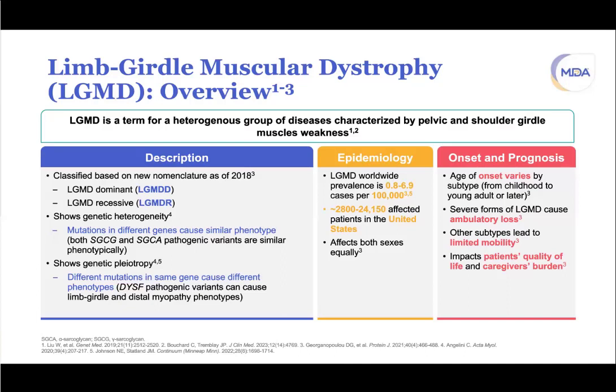There is quite a bit of genetic heterogeneity, meaning mutations in different genes can cause a very similar phenotype. For example, sarcoglycan gamma and alpha pathogenic variants can cause an indistinguishable phenotype based on clinical history and exam alone. LGMD is also characterized by genetic pleiotropy — disferlin mutations can cause the distal myopathy version historically called Miyoshi myopathy, which can look very similar to anoctamin 5 variants.